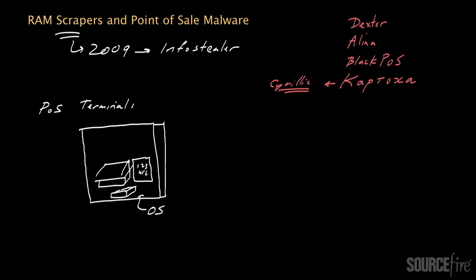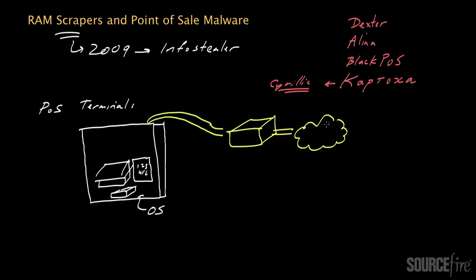It will also have an operating system for carrying out basic functions. In many cases that operating system will be a general one that's widely available — it might in fact be a version of the one you're running on your computer right now. The point-of-sale terminal might also have a network connection so that it can communicate with other devices, for example to transmit credit card transaction details to the back office for validation.